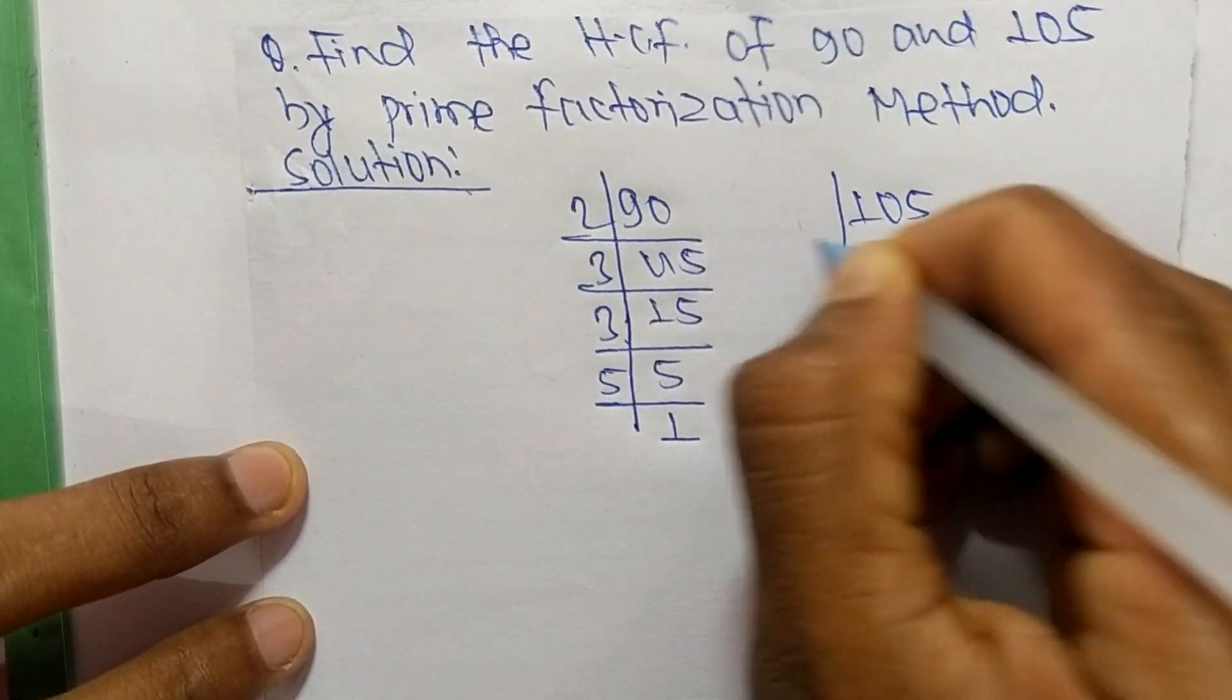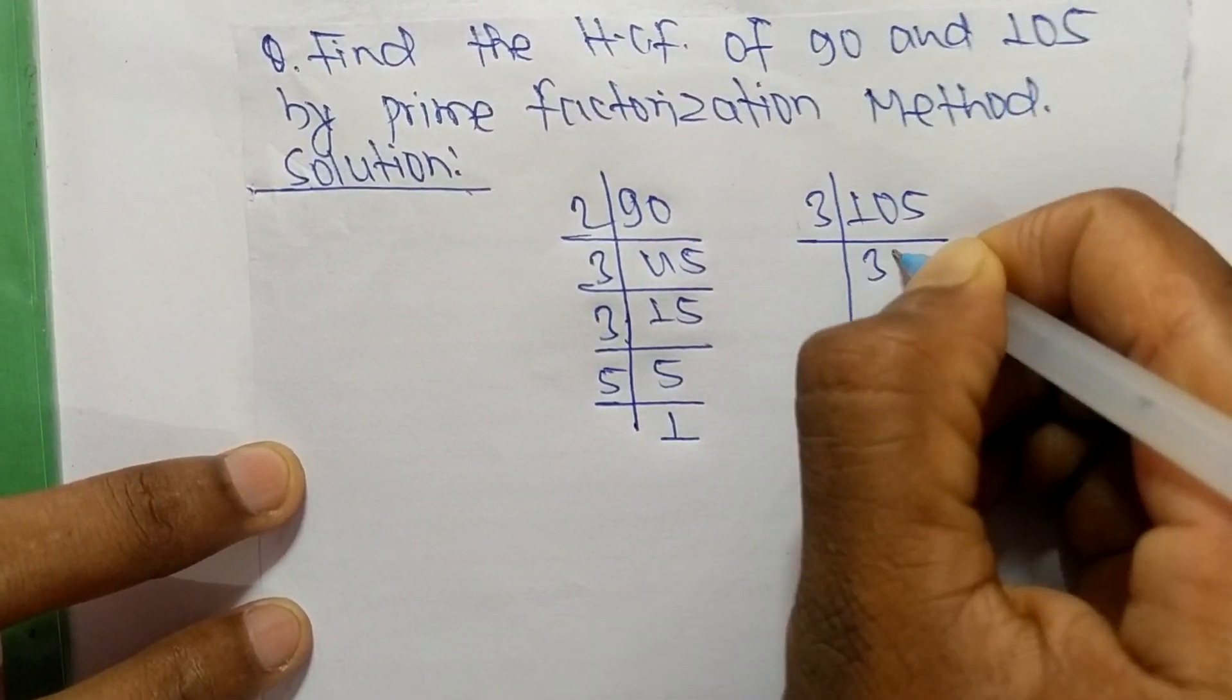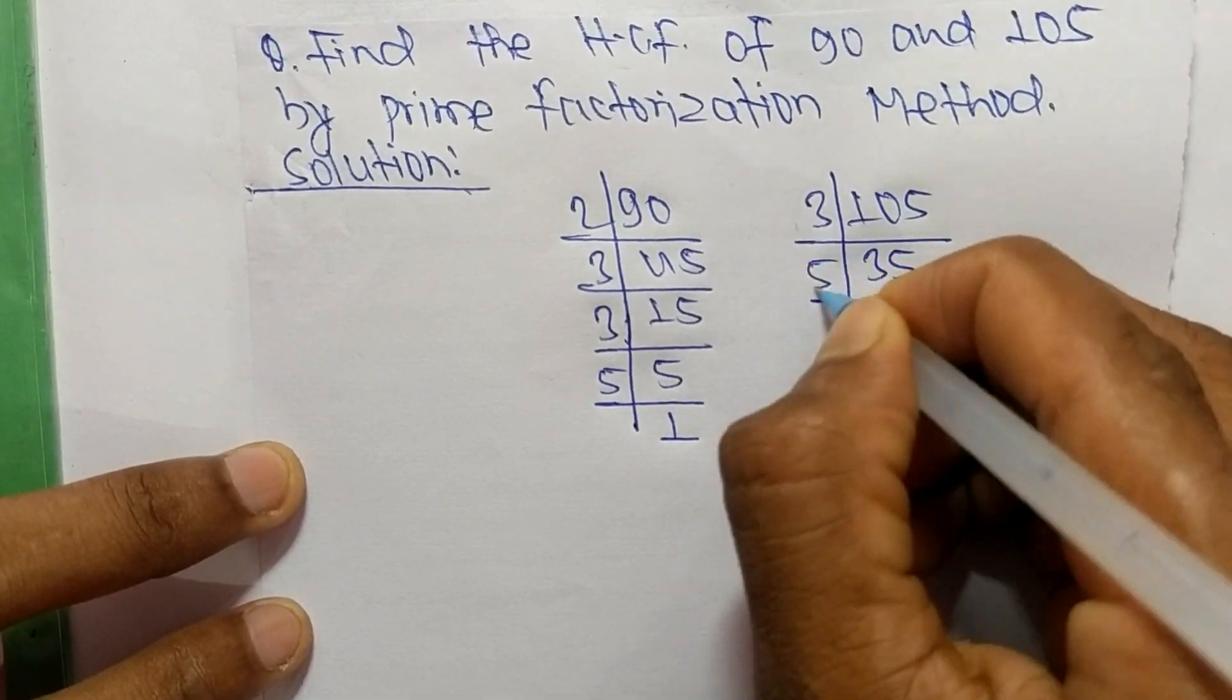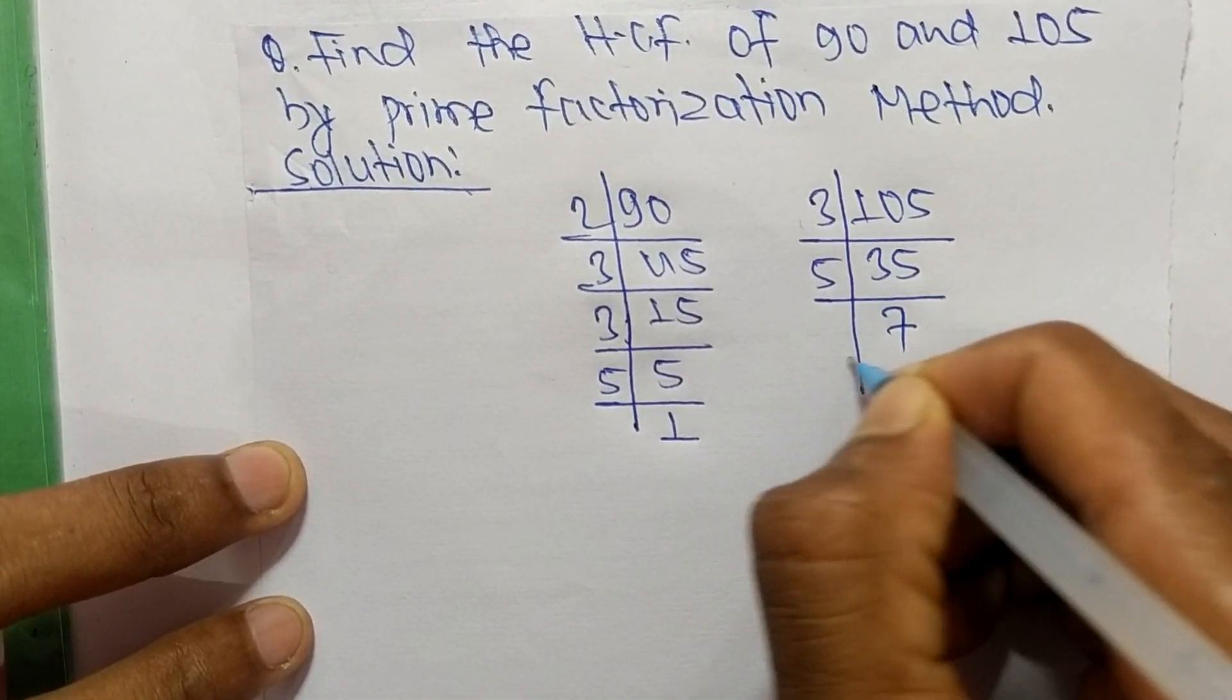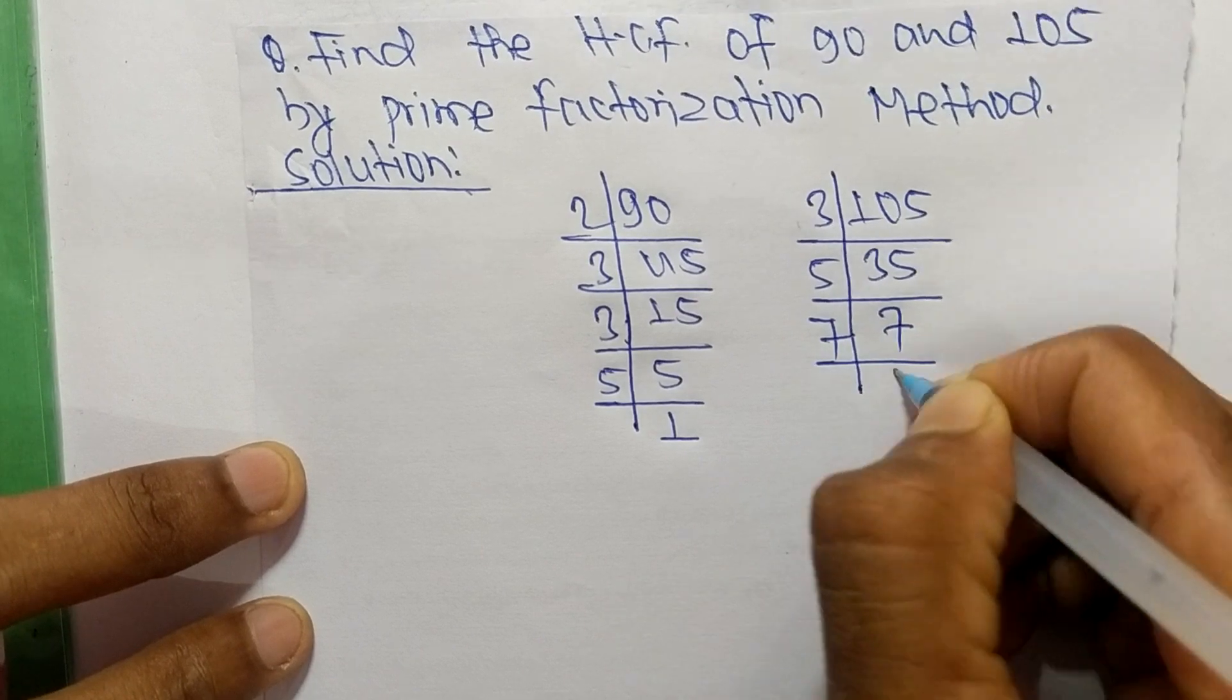...of 105 are: it is 3 times 35 mean 105, 5 times 7 mean 35, and 7 times 1 mean 7.